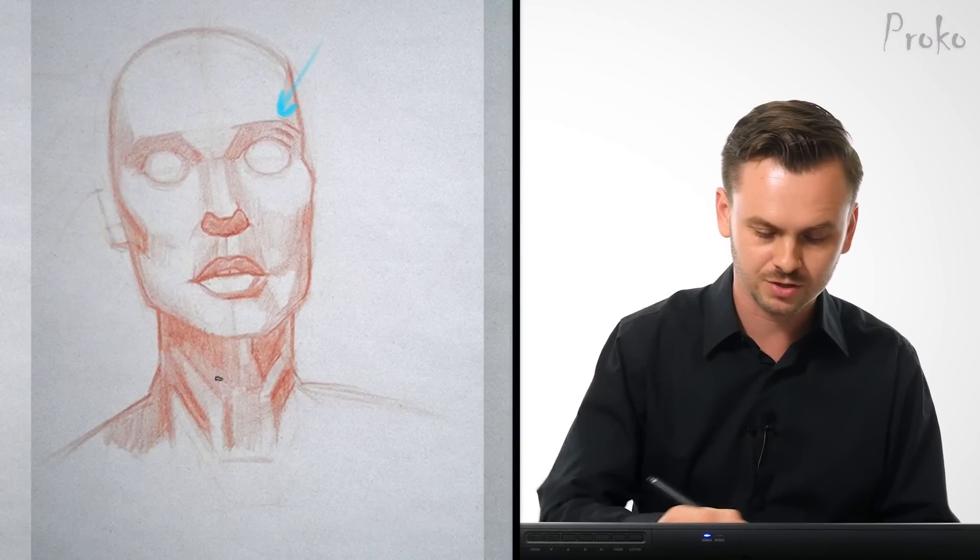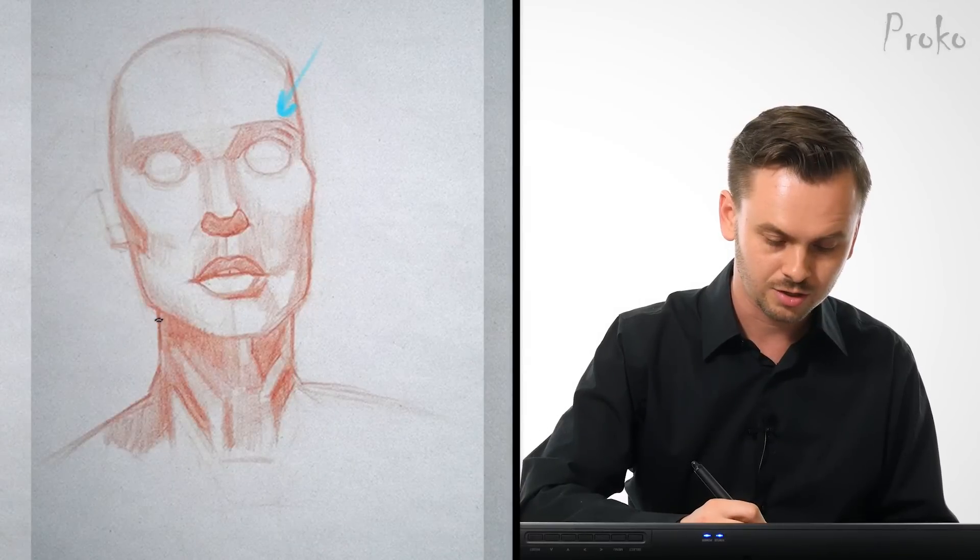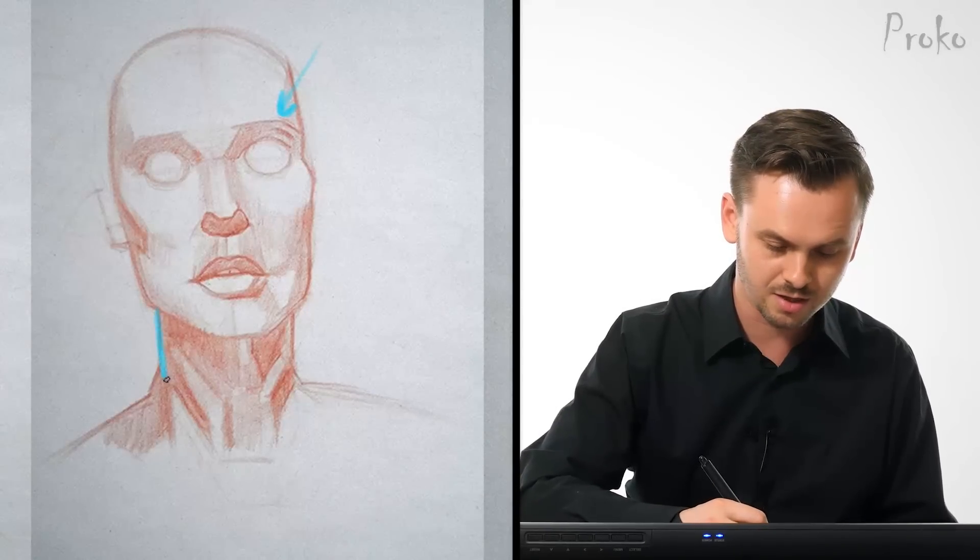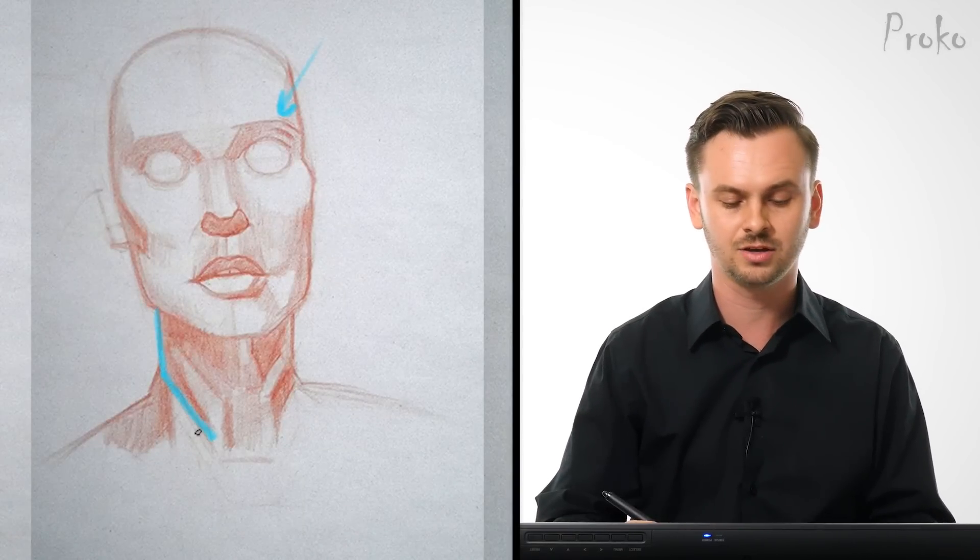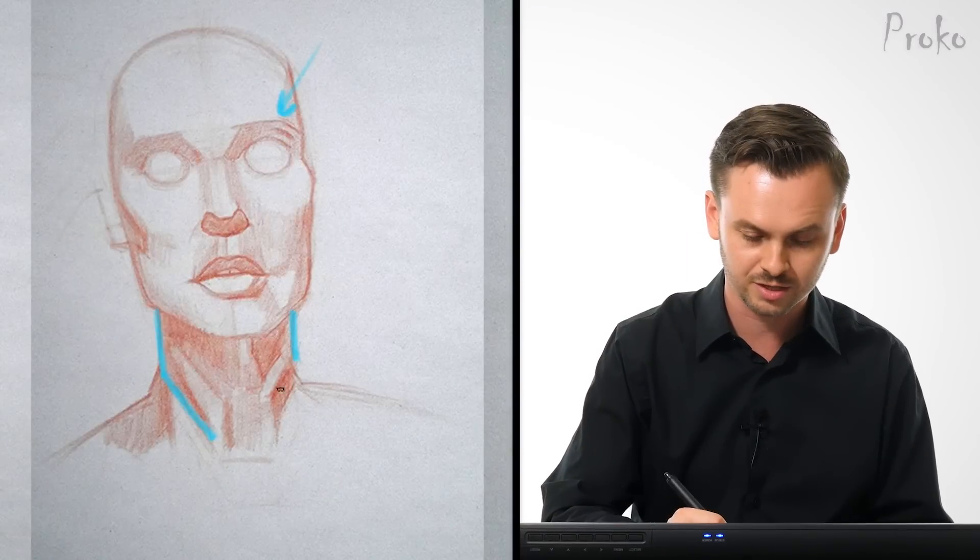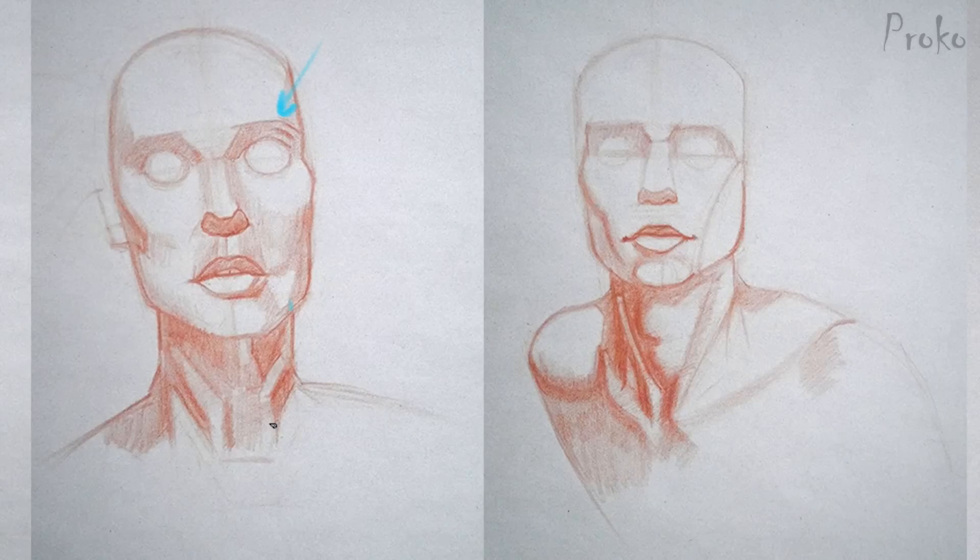So like in here, for example, the sternomastoid, it kind of looks like it goes down and then straight out like that, you got a really sharp angle. Same thing in here, look at that sharp angle. Think more of an elegant swoop coming down like that, and another one like that.